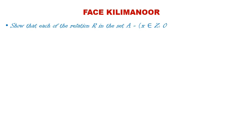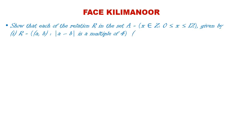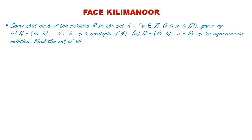Question 9: Show that each of the relation R in set A = {x ∈ Z : 0 ≤ x ≤ 12} given by (i) R = {(a,b) : |a−b| is a multiple of 4} and (ii) R = {(a,b) : a = b} is an equivalence relation. Find the set of all elements related to 1 in each case.